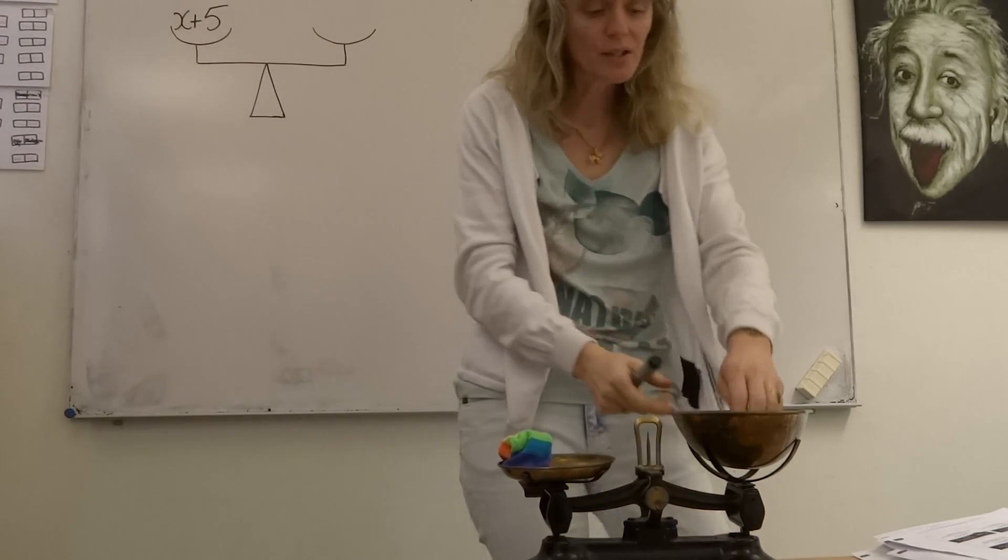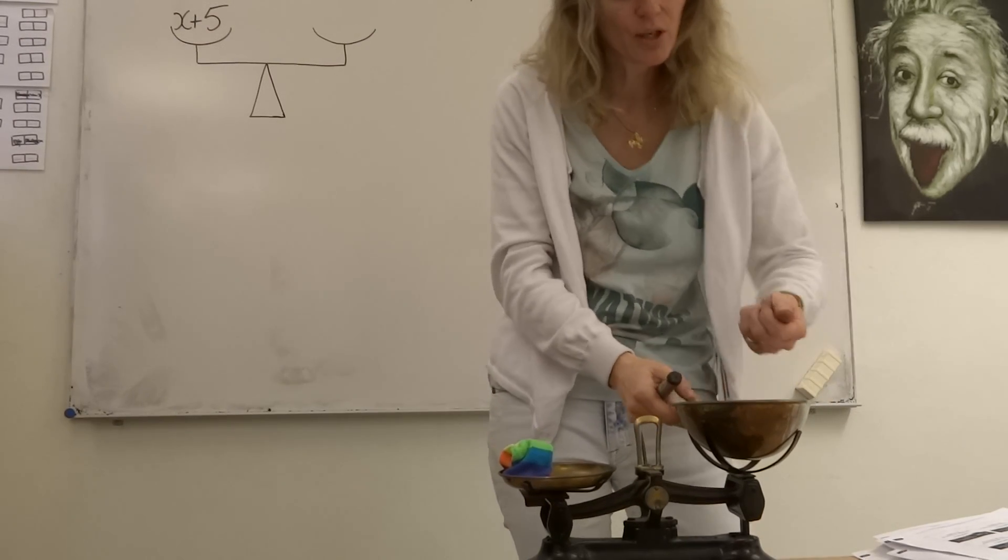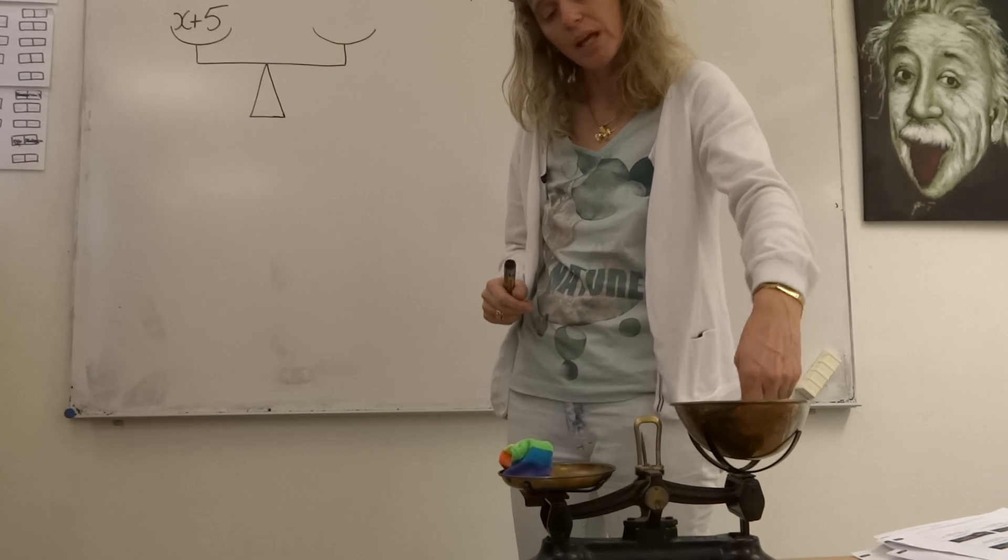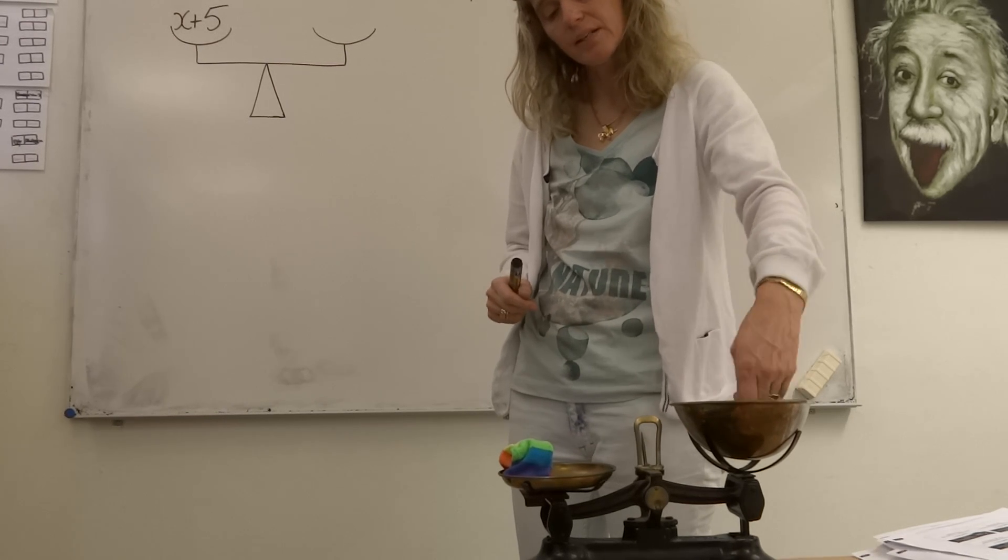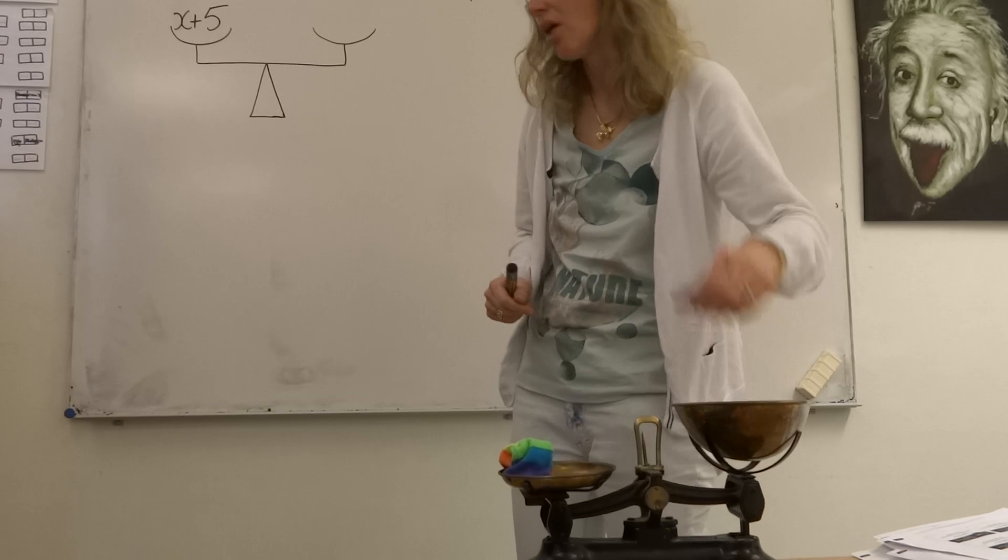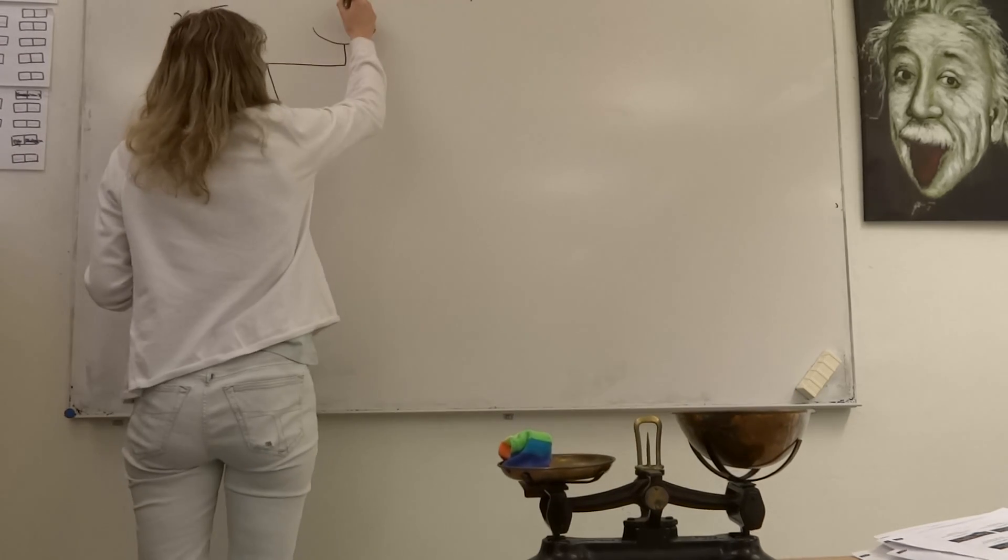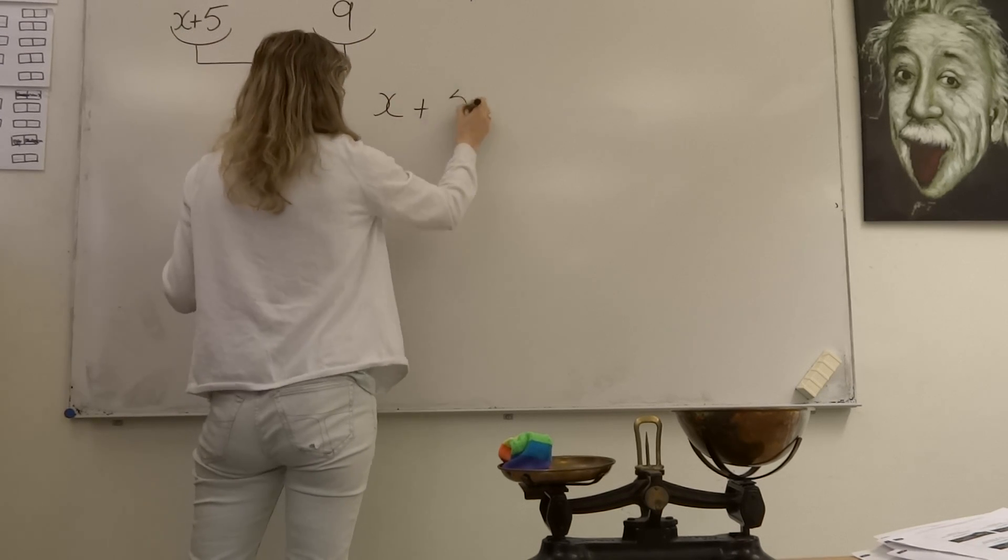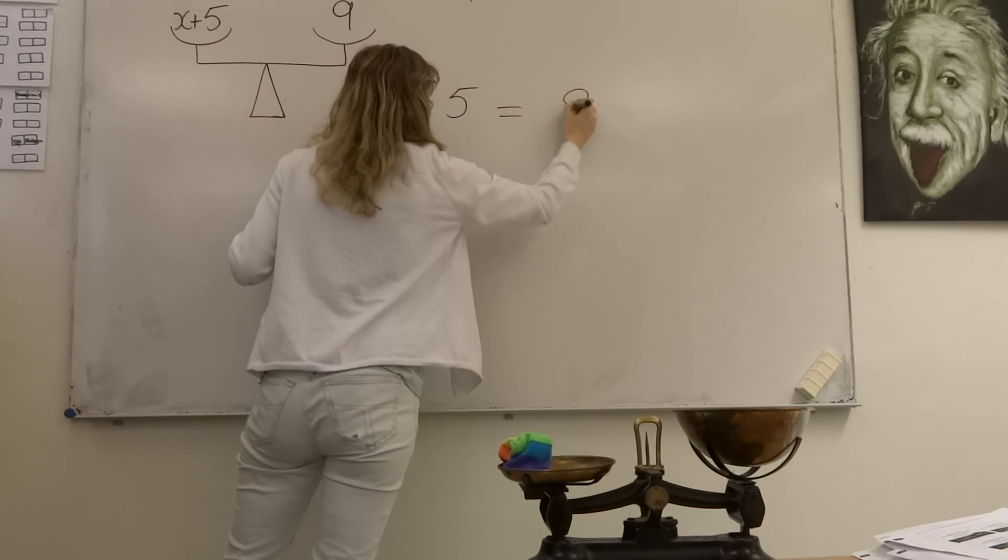And it's balanced when I have this amount of coins. Let's just check how many coins do we have on this side of the scale. 1, 2, 3, 4, 5, 6, 7, 8, 9. So, when I have x plus 5 equals 9.